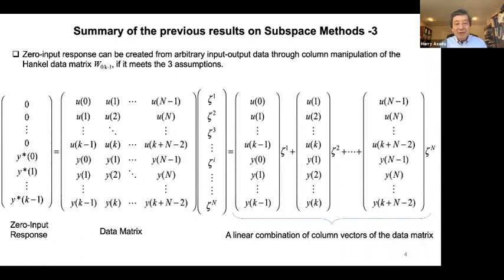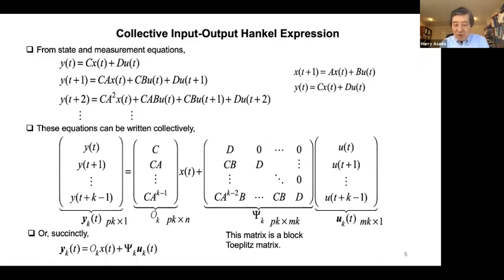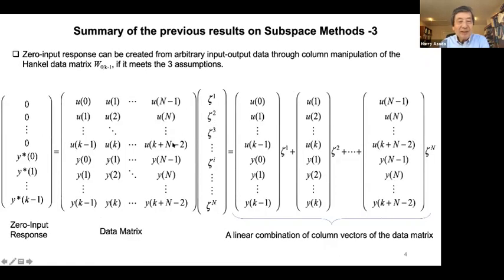Once you create the zero-input responses, you can find the controllability and observability matrices, and from those determine the ABCD matrices. One key question is: what properties and conditions must the data you collect satisfy? Let's look at that. Here are the original discrete-time state equations. We can derive Y(T+1) by substituting, getting expressions for Y(T), Y(T+1), Y(T+2), and so on.